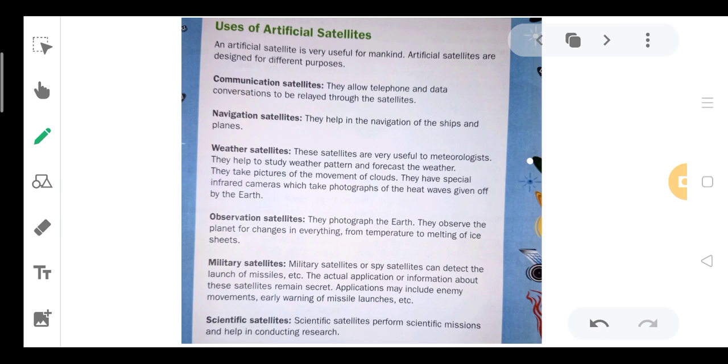Weather satellites are very useful for meteorologists. They help to study the weather pattern and forecast the weather. They take pictures of the movements of the clouds, and they have special infrared cameras which take photographs of the heat waves given off by the earth.